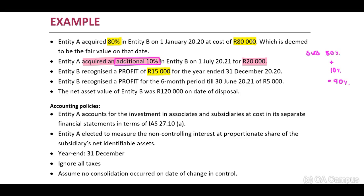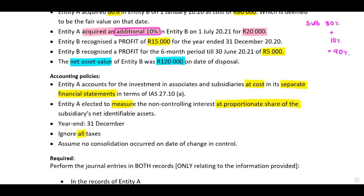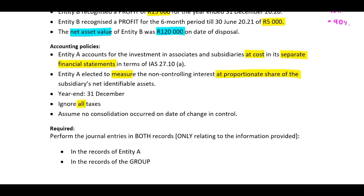Entity B recognized a profit for the six-month period to 30 June 2021 of 5,000. The net asset value of Entity B was 120,000 on date of the change. Entity A accounts for investments in associates and subsidiaries at cost in its separate financial statements per IAS 27. Entity A elected to measure non-controlling interest at proportionate share of the subsidiary's net identifiable assets. Year end is 31 December. Ignore all taxes and assume no consolidation occurred on date of changing control. Perform your journal entries.